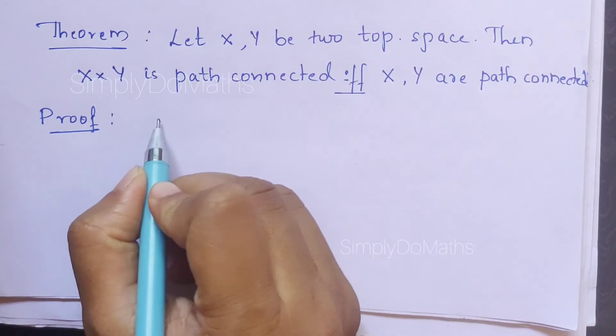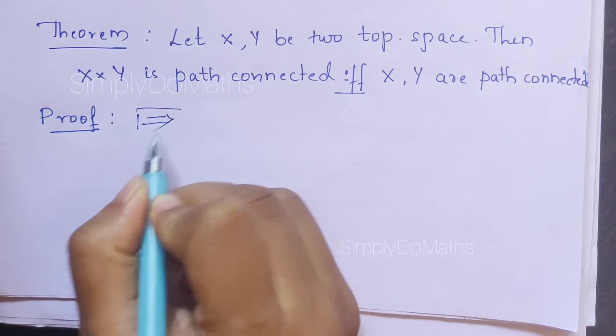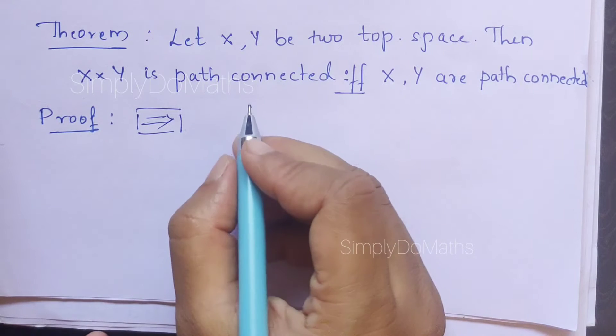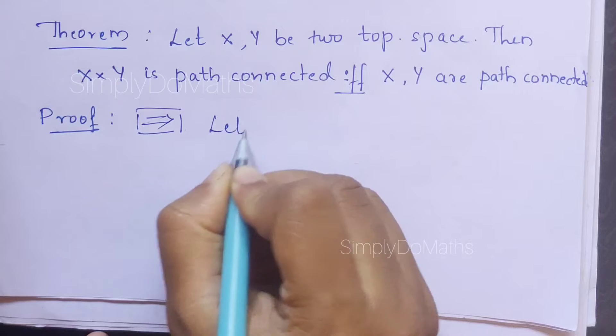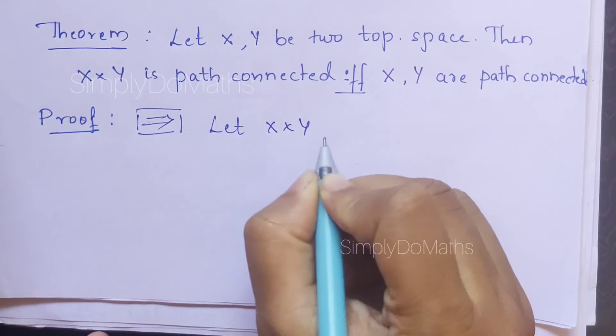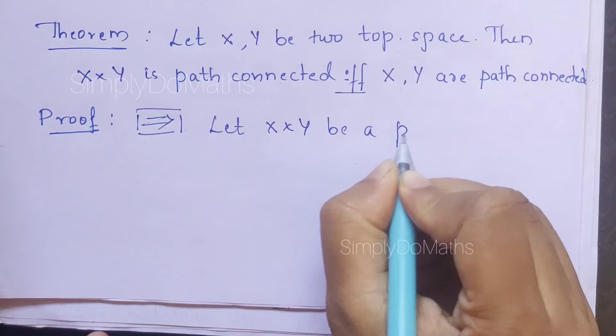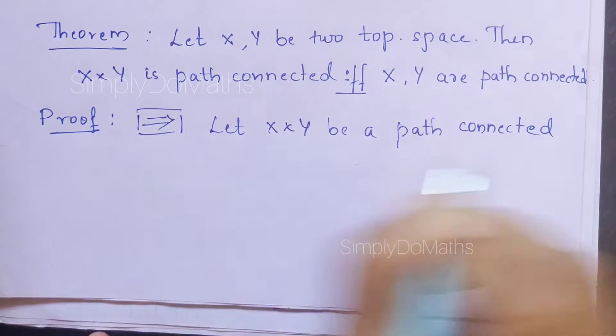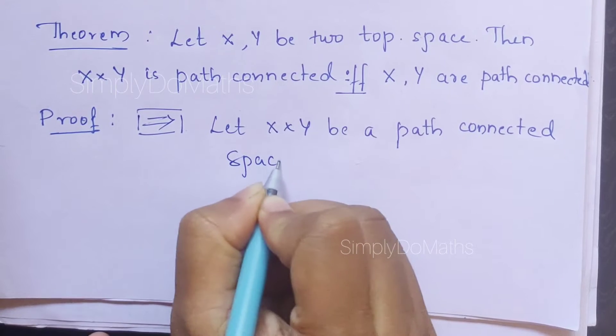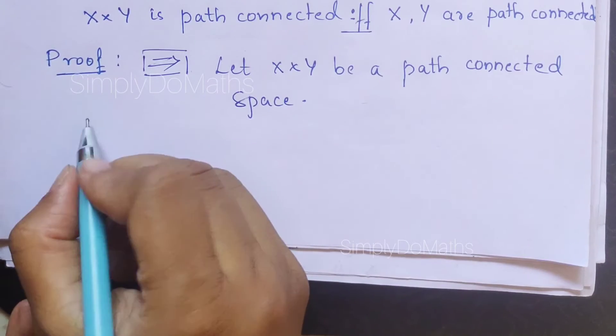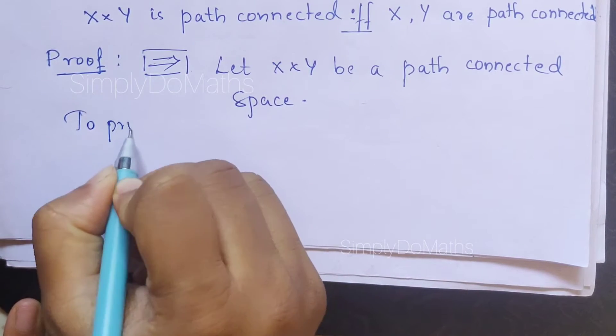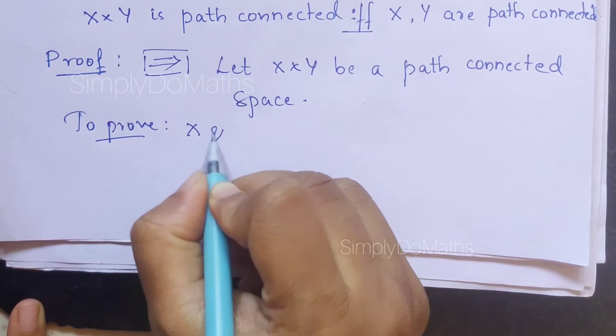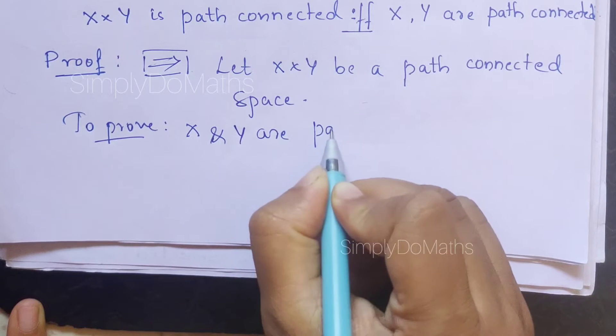Here we have an if and only if condition, so we need to prove both the direct part and the converse part. Let us consider X×Y to be a path-connected space. Again, we will be using the projection mapping concept to prove this.